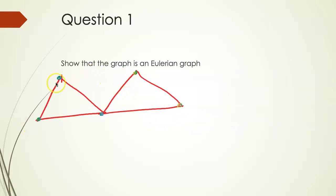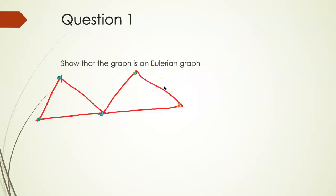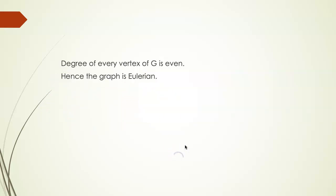Coming to questions: show that the following graph is an Eulerian graph. The degree of every vertex of G is even, as can be seen — degree 2, degree 2, degree 4, degree 2, and degree 2. So that graph is Eulerian.